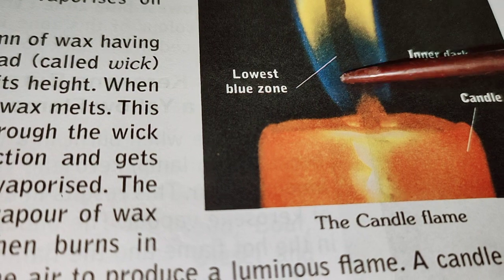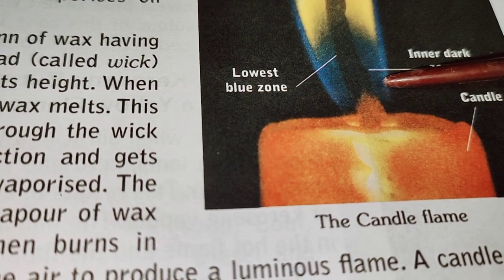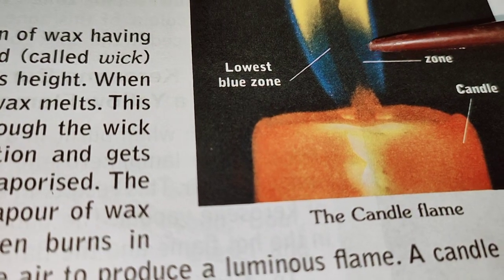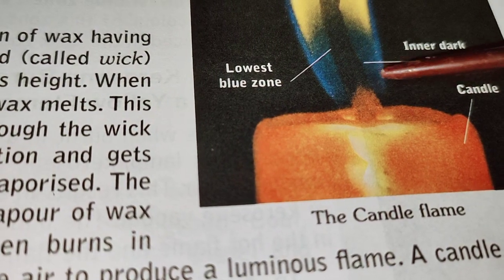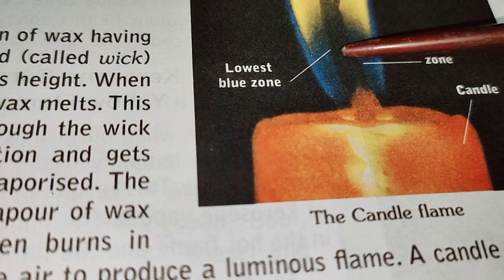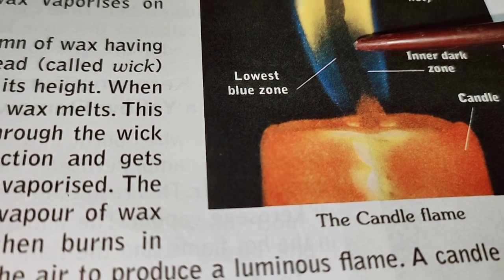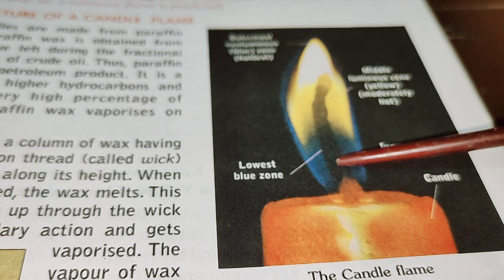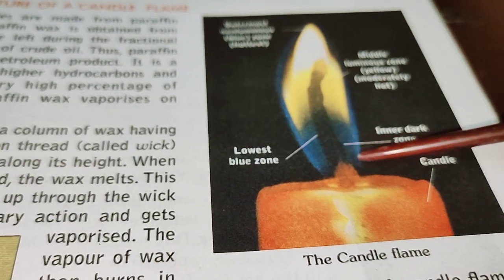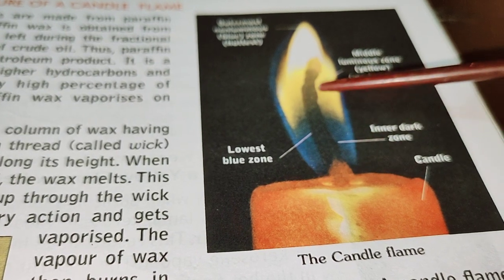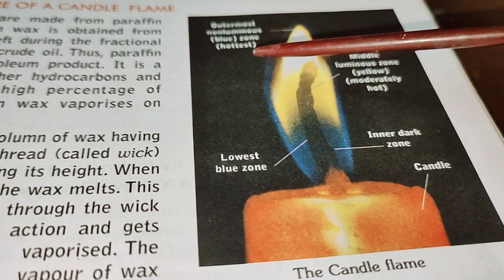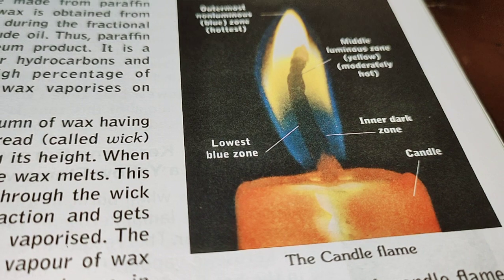The last zone is the lowest blue zone in a candle flame. It is blue in color because of the complete combustion of the carbon monoxide produced during incomplete combustion. Carbon monoxide is produced due to incomplete combustion of the fuel. In this lowest blue zone, there is complete combustion of the carbon monoxide that was produced due to incomplete combustion in the inner dark zone. So these are the four different zones in a candle flame.